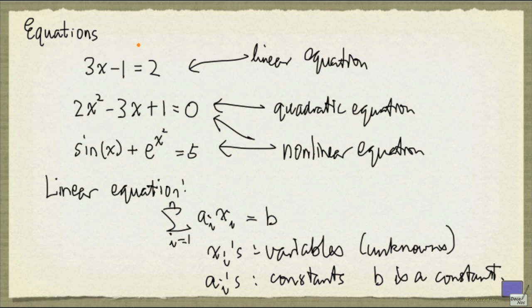So in the example here, 3x minus 1 equal to 2, that's not exactly in this form yet. But we can turn it into that form by adding one to both sides. And so this equation, which is equivalent to the equation here, is a linear equation.